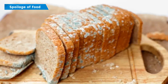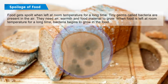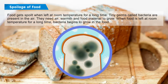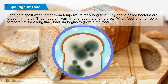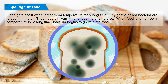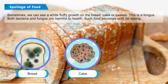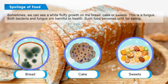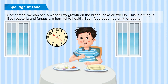Spoilage of Food: Food gets spoiled when left at room temperature for a long time. Tiny germs called bacteria are present in the air. They need air, warmth, and food material to grow. When food is left at room temperature for a long time, bacteria begin to grow in the food. Sometimes we can see a white fluffy growth on bread, cake, or sweets — this is a fungus. Both bacteria and fungus are harmful to health, and such food becomes unfit for eating.